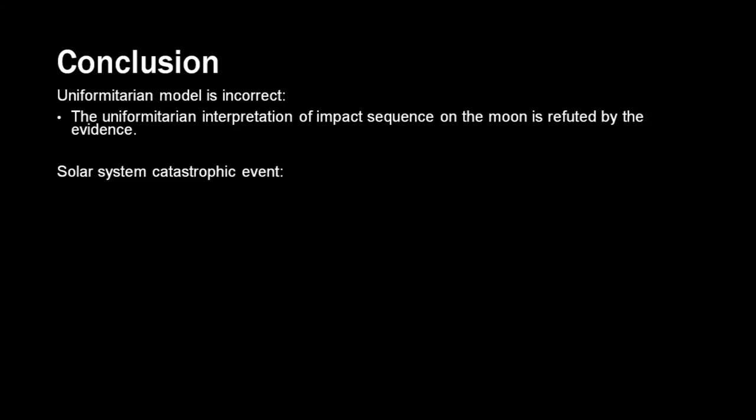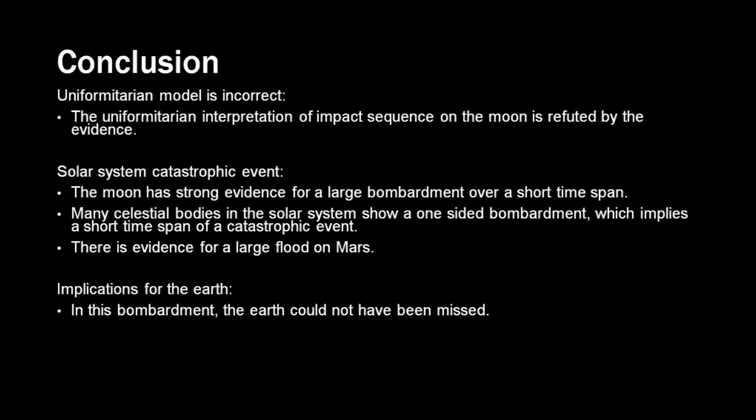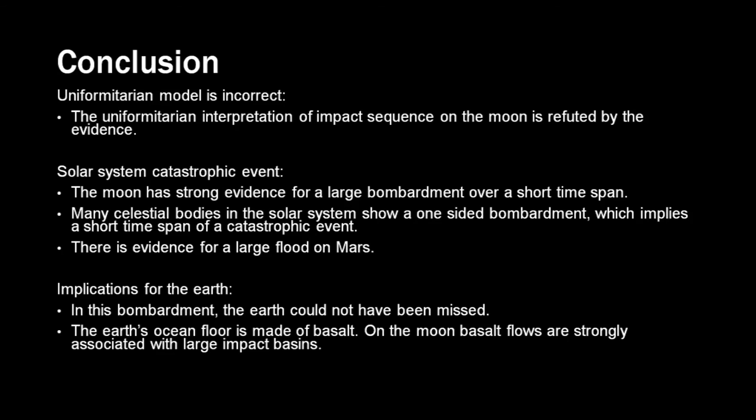So here's the conclusion. The uniformitarian model is incorrect. The sequence of the moon and the time span is refuted by the evidence. The solar system has been involved in a catastrophic event. The moon shows strong evidence for a large bombardment over a short time span. Many celestial bodies in the solar system show a one sided bombardment which implies a short time span for a catastrophic event. There's evidence for a large flood on Mars and this also has implications for the earth. In this bombardment the earth could not have been missed. The ocean floor is made of basalt and the moon basalt flows are strongly associated with large impact basins. Also evidence on the earth itself fits a single one sided bombardment. So it seems that the entire solar system has been involved in a genesis flood.